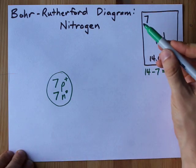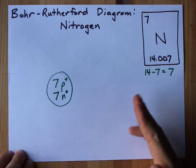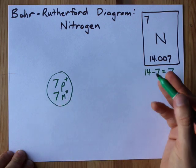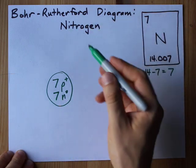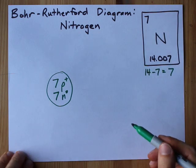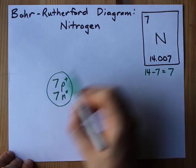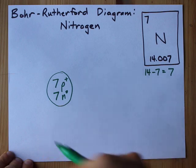I need seven electrons as well here. This is a neutral atom. They haven't told us that there's any ion thing happening here. So I need the same number of electrons as I have protons. That's seven.